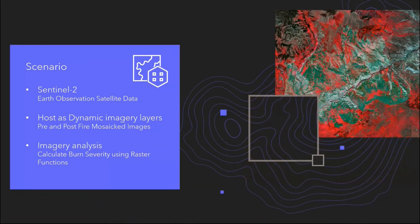In this scenario, we're going to be utilizing open source Sentinel-2 Earth observation satellite data. We want to host those as dynamic imagery layers and have pre- and post-fire mosaic images, and perform imagery analysis to calculate burn severity using raster functions, all within ArcGIS Image for ArcGIS Online.